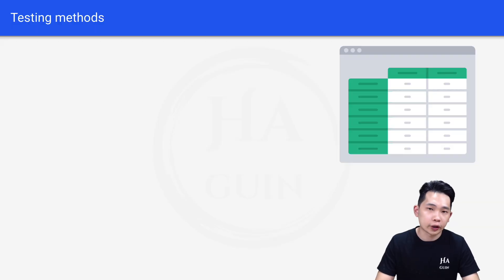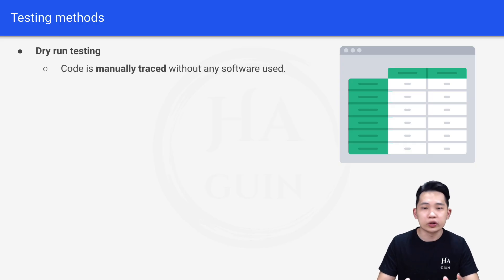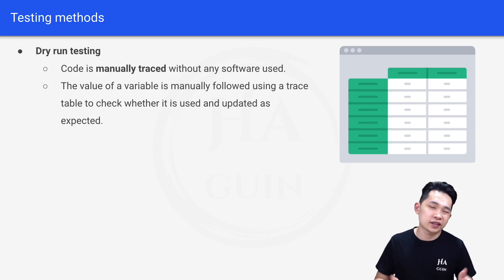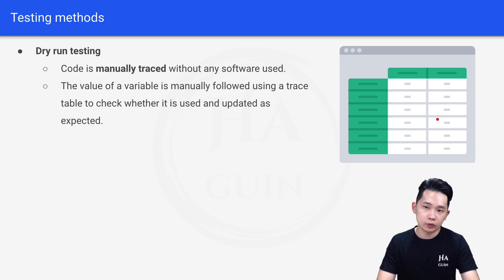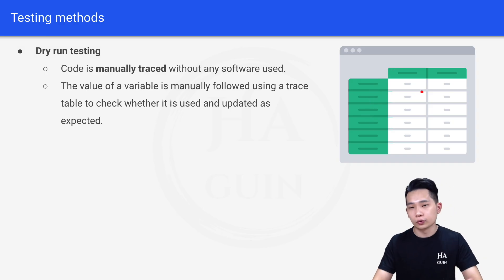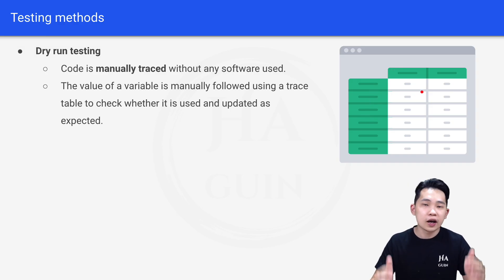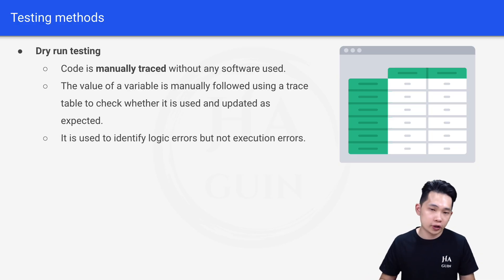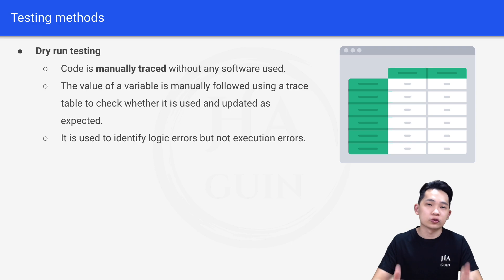The first testing method is dry run testing. The code is manually traced without any software use. The value of a variable is manually followed using a trace table to check whether it is used and updated as expected. It's used to identify logic errors but not execution errors, since the code is manually traced.